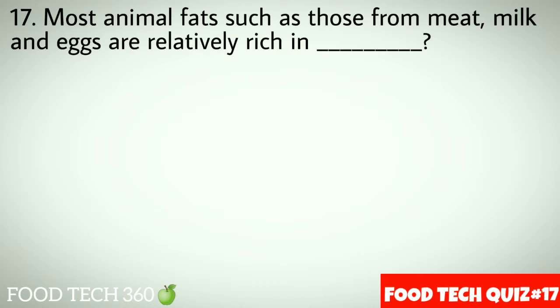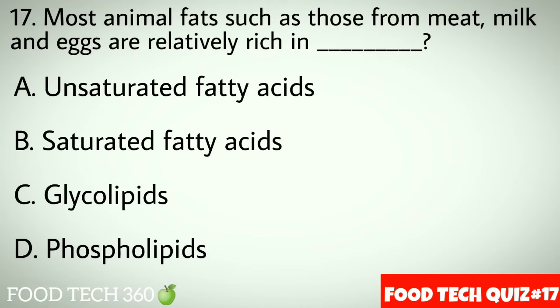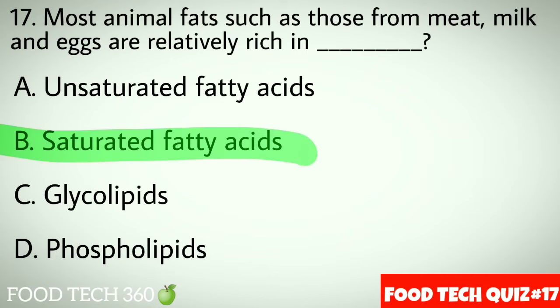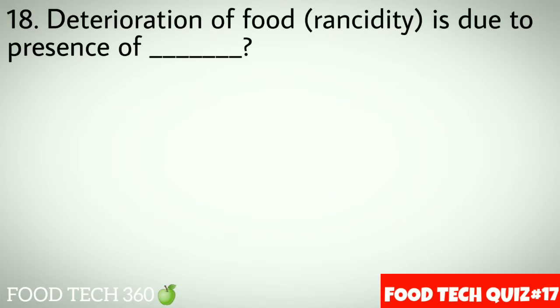Question number 17: Most animal fats such as those from meat, milk, and eggs are relatively rich in dash. Options: A. Unsaturated fatty acids, B. Saturated fatty acids, C. Glycolipids, D. Phospholipids. Correct answer: B. Saturated fatty acids.